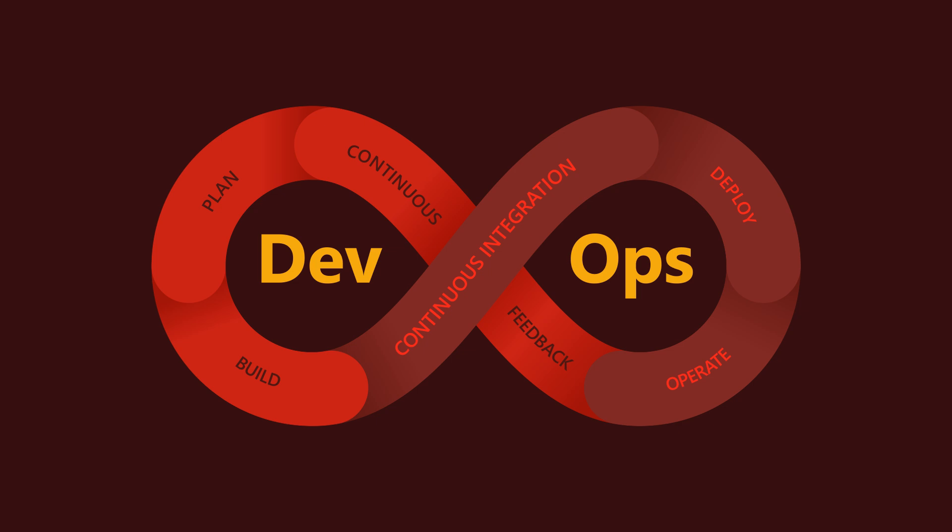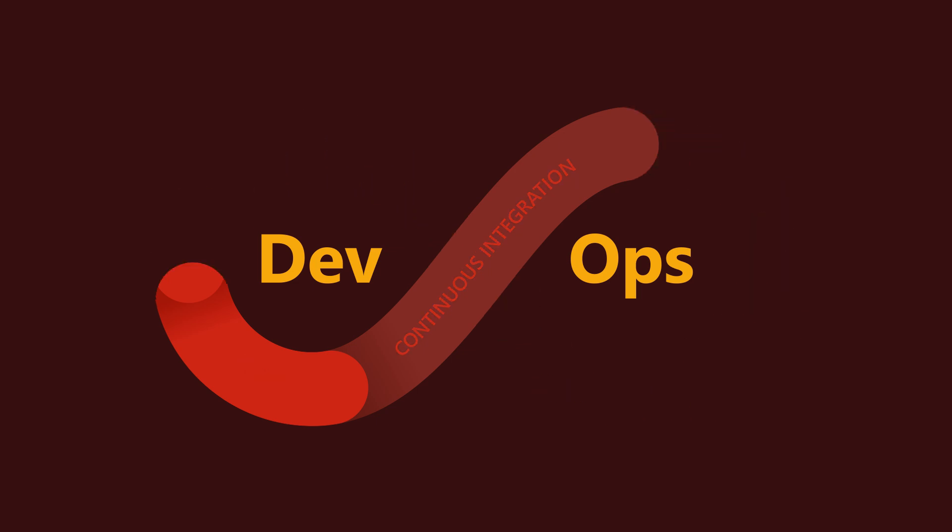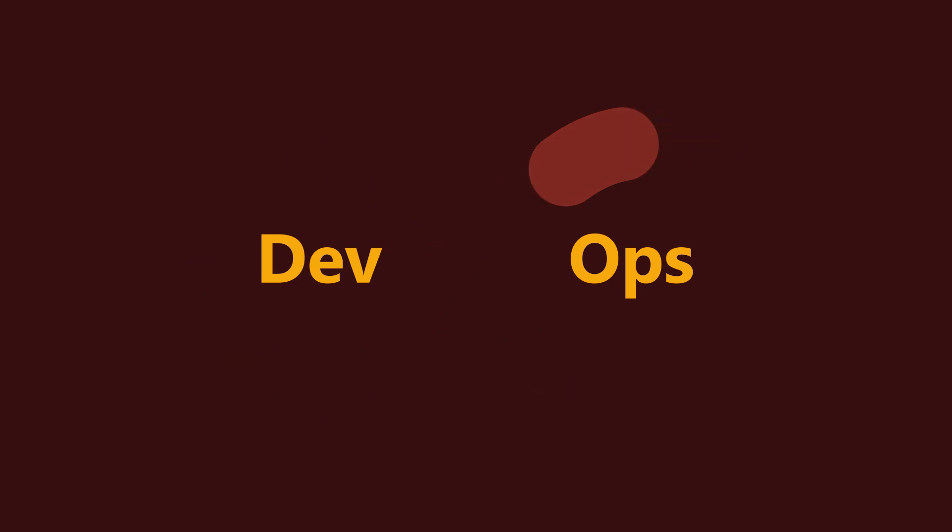What makes DevOps great is that we can release more often, test more precisely, and receive feedback from production on the go. Eventually, we are delivering more value to our customers more often. The main principles of DevOps are explained by the CAMS model, which was created by Damon Edwards and John Willis.